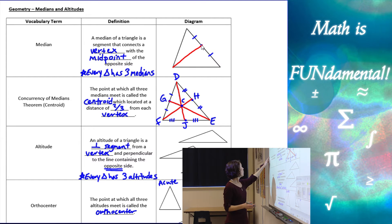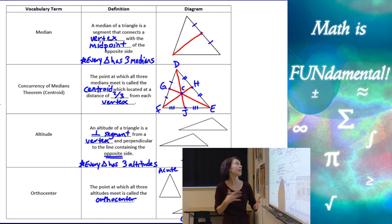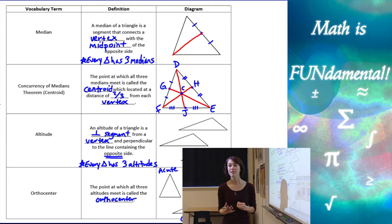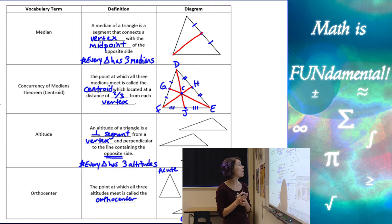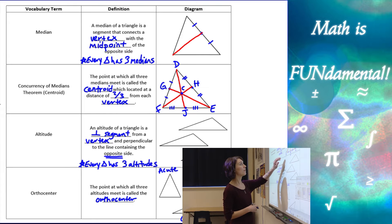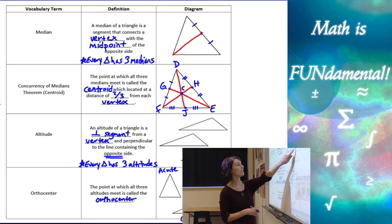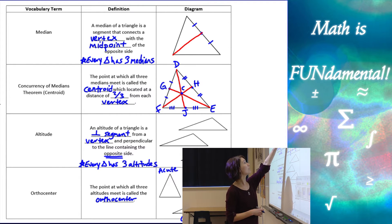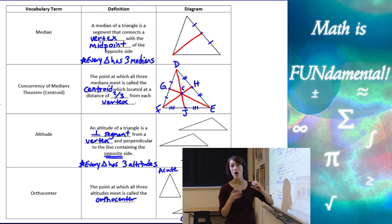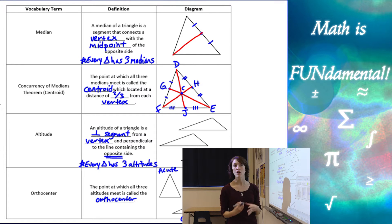So why that's useful is what comes next: the concurrency of medians theorem, which is really the definition of what we call the centroid. The centroid is the point at which all three of the medians meet each other. As you can see in this diagram, we have a median from vertex F to midpoint H, a median from vertex E to midpoint G, and a median from vertex D to midpoint J.